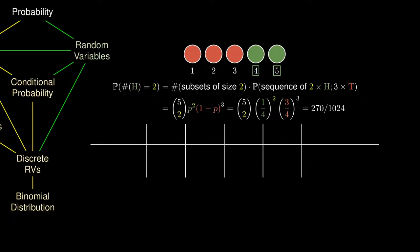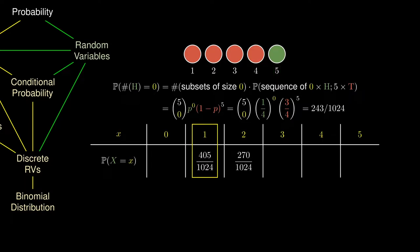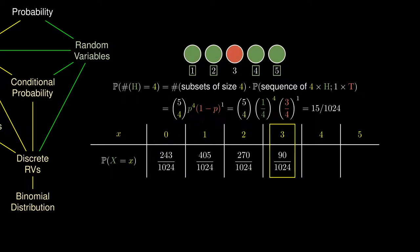We can summarize our results in the probability distribution table, but suppose instead we are only asking for the probability of obtaining one head. Then these are the possible choices of coins. Similarly, we can find the probability that there are no heads, the probability that there are three heads, the probability that there are four heads, and the probability that there are five heads.